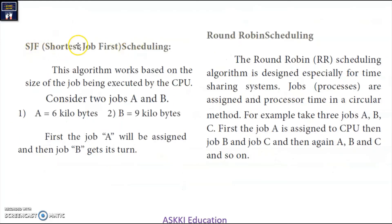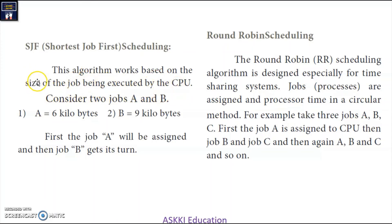The second algorithm is Shortest Job First (SJF) scheduling. As the name suggests, the shortest job is executed first by the CPU. The algorithm works on the size of the job being executed. For example, if one job is 6KB and another is 9KB, the smaller 6KB job A is executed first, then the 9KB job B gets its turn.